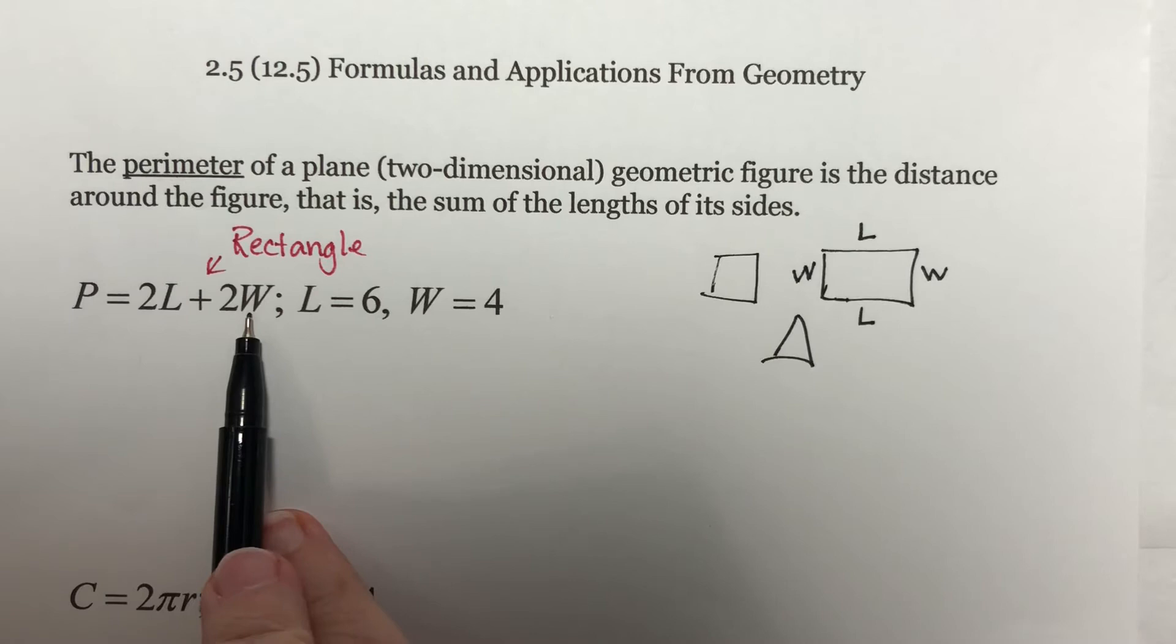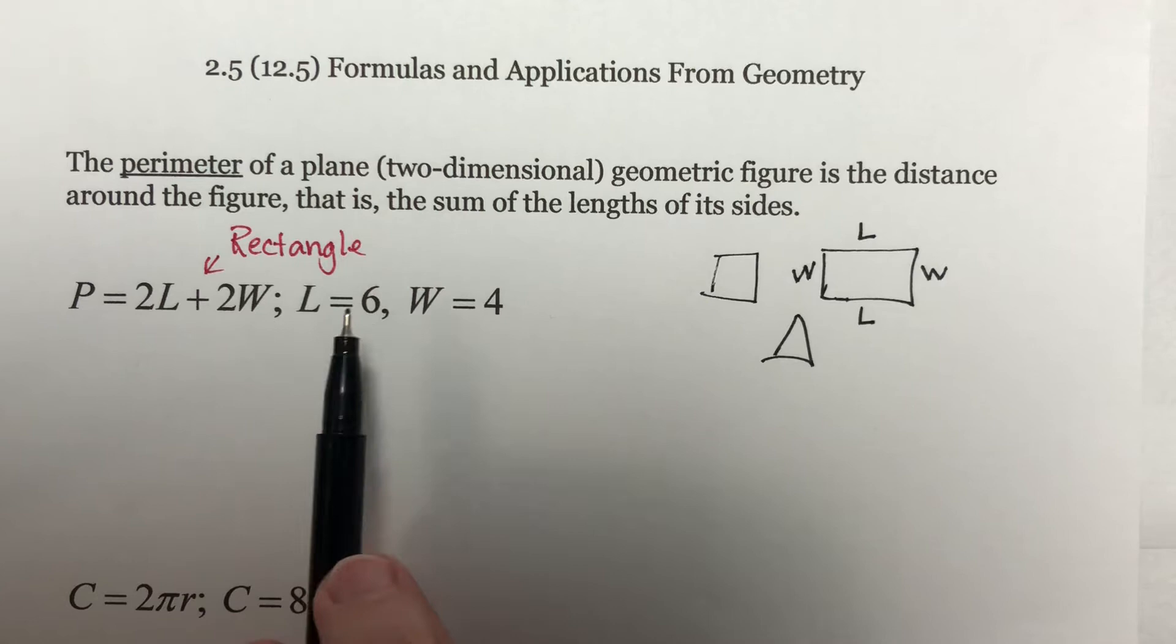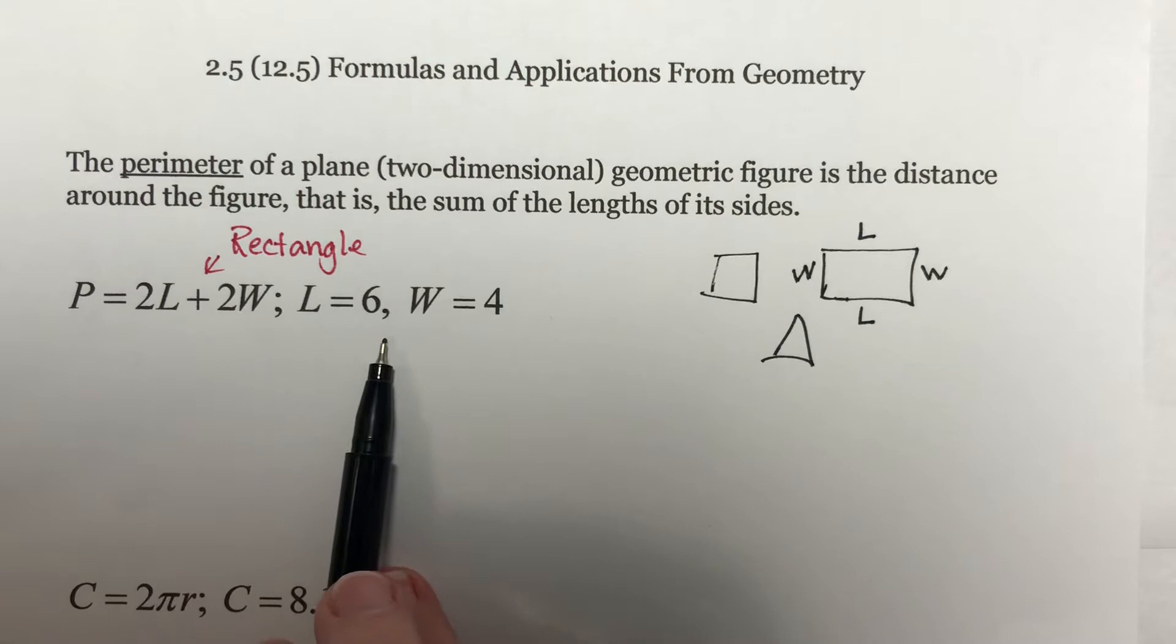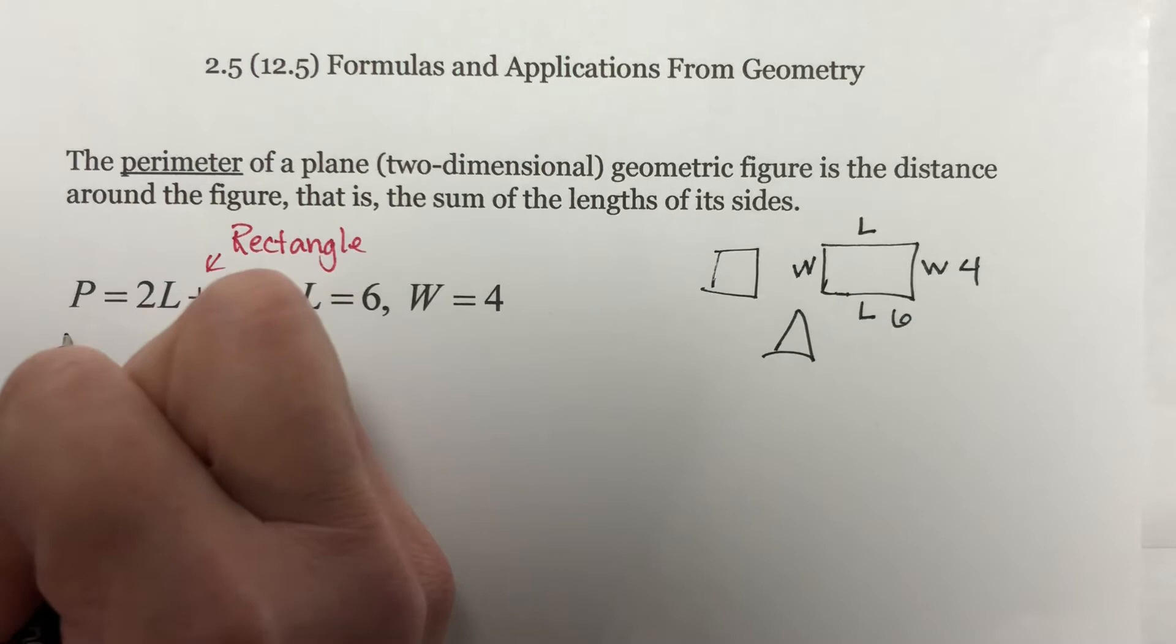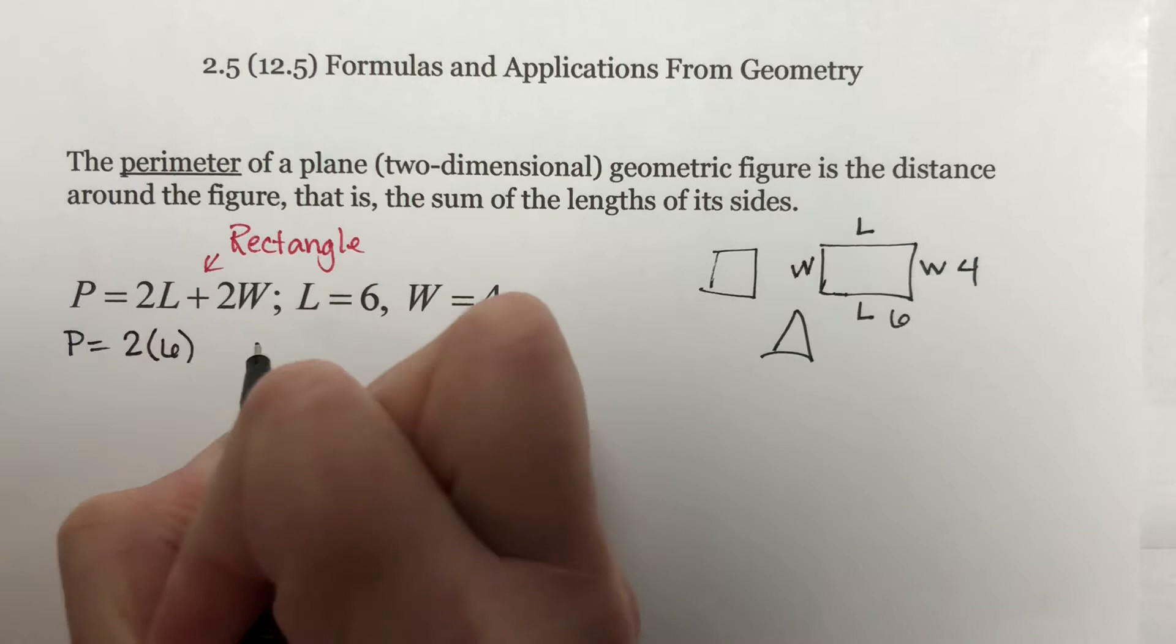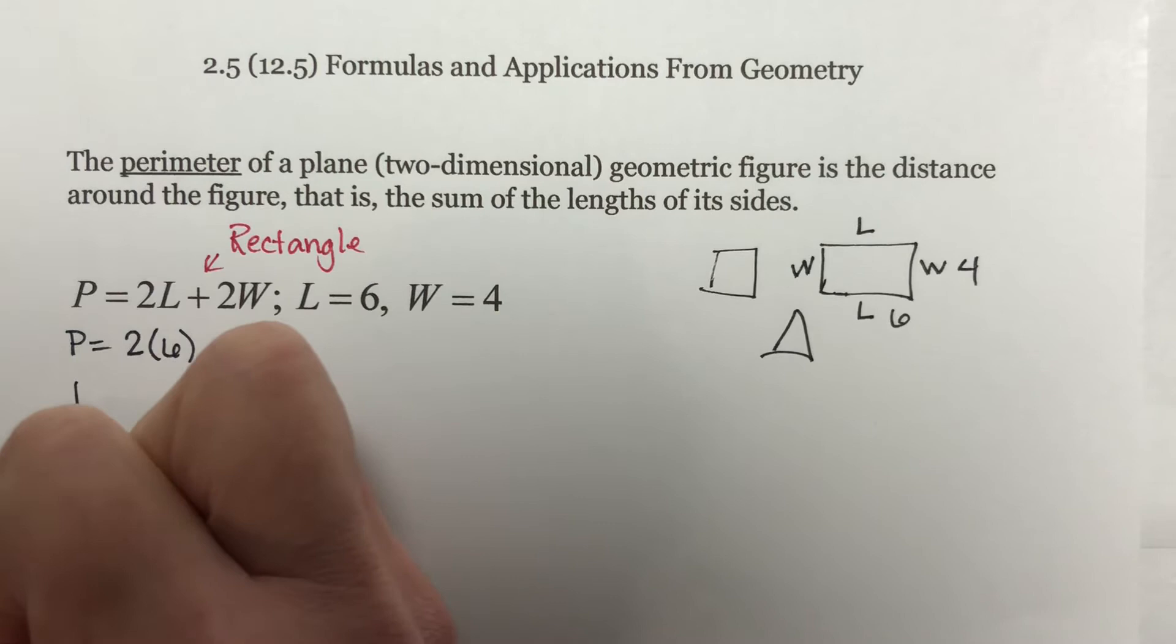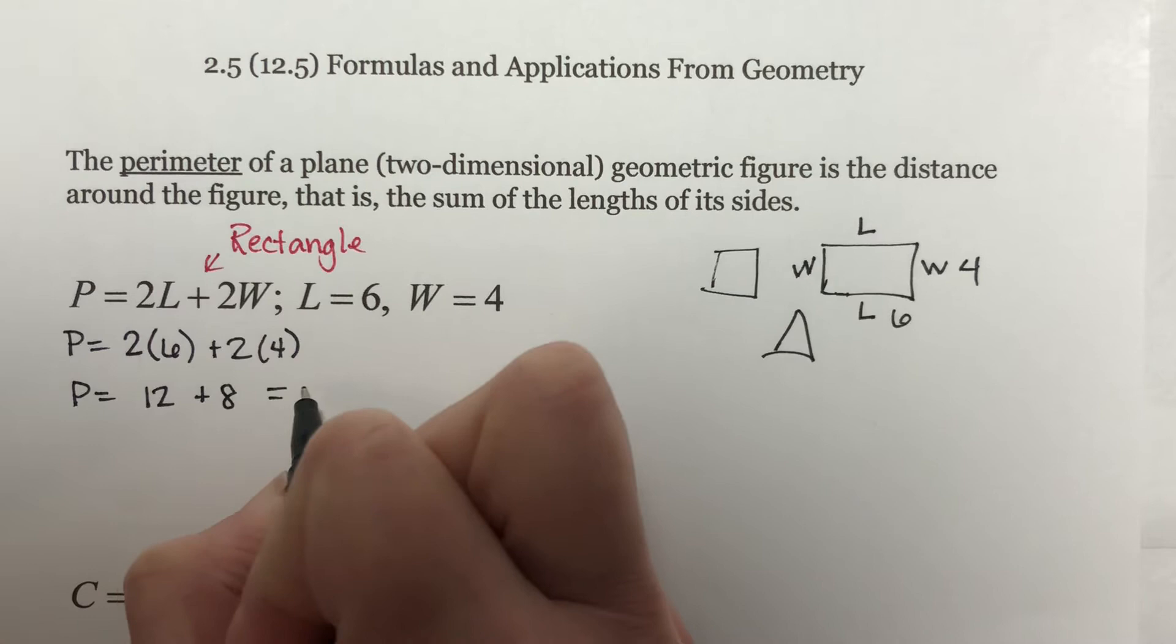We are given the length of 6, and we are given the width of 4, and we're asked to find the perimeter. Now, if you just understand what perimeter is and rectangle, even if you weren't given this formula, you could build it. I could say, well, this is 6, and this is 4, and I could add them all up. Let's talk about using the formula, though. The perimeter is 2 times the length, which is 6, plus 2 times the width, which is 4. So this perimeter is 12 plus 8, and that is 20. So the perimeter here is 20.